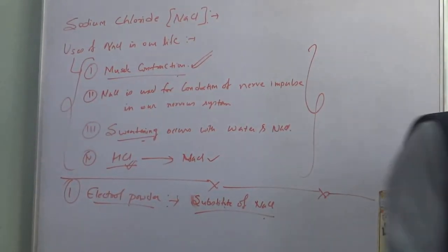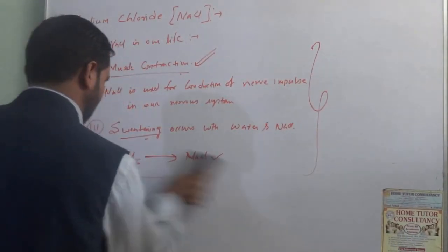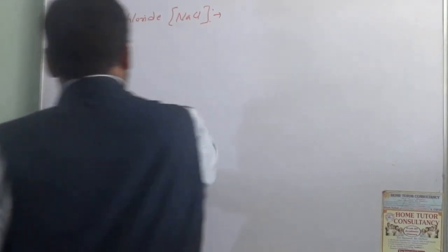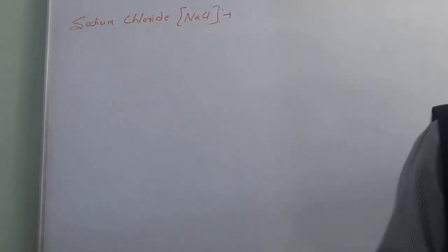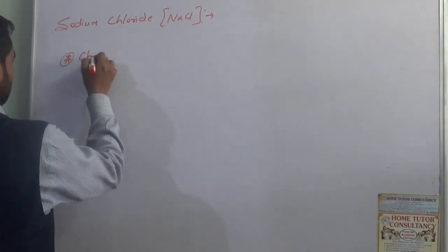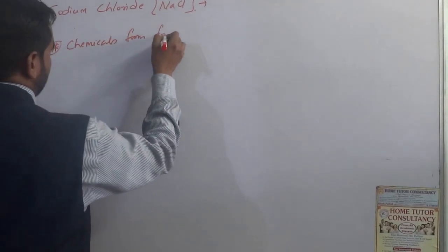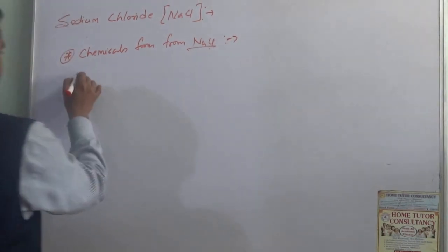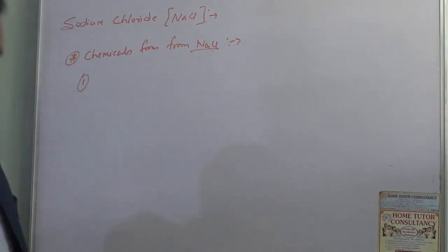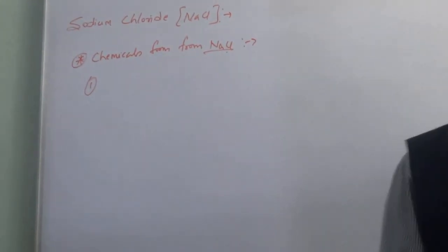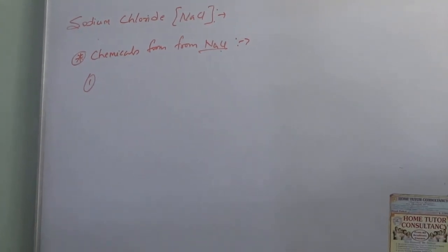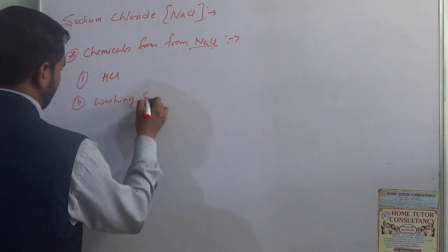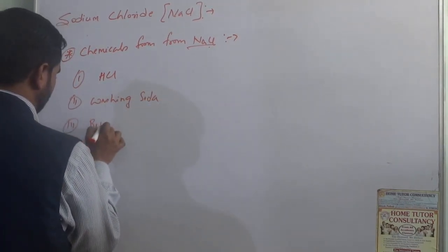Now we will talk about which chemicals are formed from sodium chloride. From NaCl, we get washing soda — washing soda is made using it — and baking soda. Washing soda is sodium carbonate decahydrate, and baking soda is sodium bicarbonate. HCl, hydrochloric acid, is also formed from NaCl.